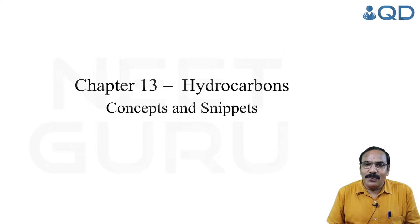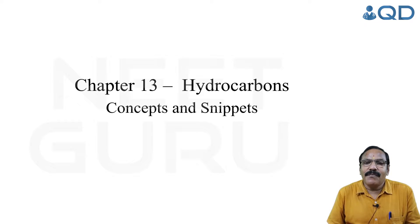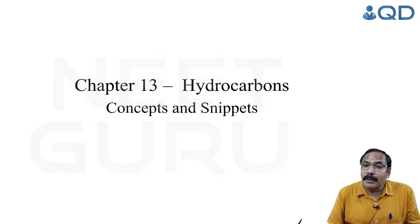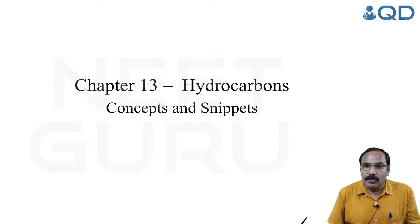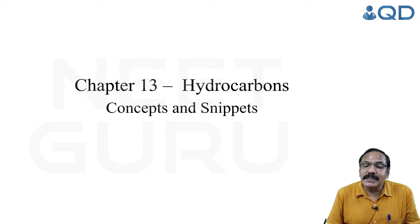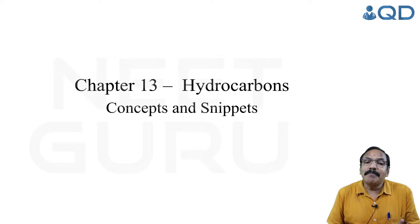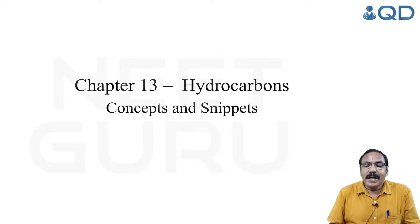Welcome students to this concepts and snippets session. Today we are going to discuss a very important chapter in organic chemistry called hydrocarbons. Hydrocarbons are the parent members of any family of organic compounds — organic compounds are hydrocarbons and their derivatives. These hydrocarbons contain only carbon and hydrogen. For example, methane is present in natural gas, benzene is an important aromatic solvent, LPG is used as domestic fuel, and CNG is used in automobiles.